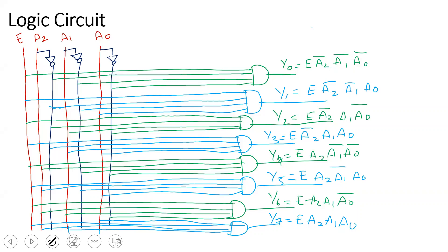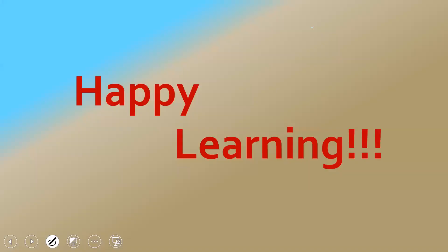Using this design, you can design higher-order decoders. For example, with 4 input lines, 2 power 4 = 16 outputs, giving a 4-to-16 decoder. Similarly, you can design a 5-to-32 decoder using the same approach. Please subscribe to my channel and click on the notification bell. Happy learning! Bye.